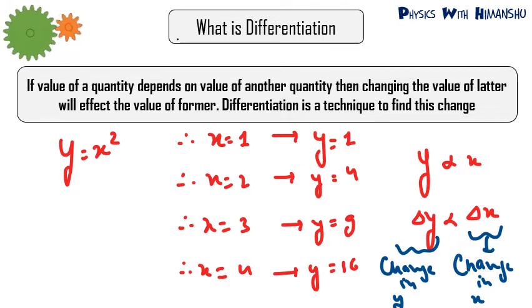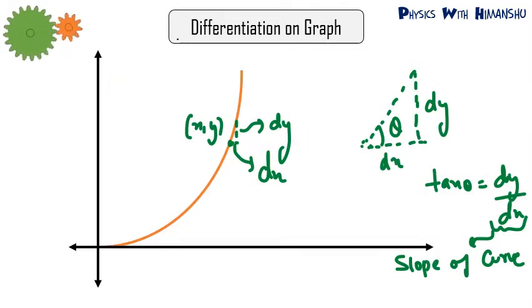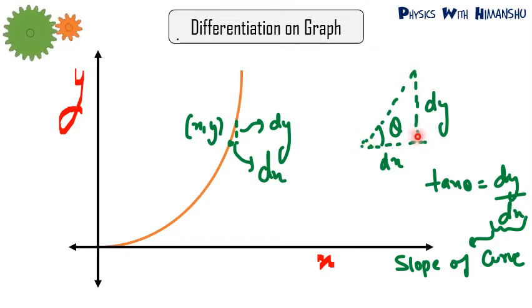We will understand this concept with the help of a graph. Suppose this is an x-y graph, with y on the y-axis and x on the x-axis. At some point there is a coordinate x comma y. If I change the value of x by dx — where dx is a very small change in x — then there will be a change of dy in y. Zooming in, the base of the right-angle triangle is dx and the perpendicular is dy, so tan theta equals dy by dx.